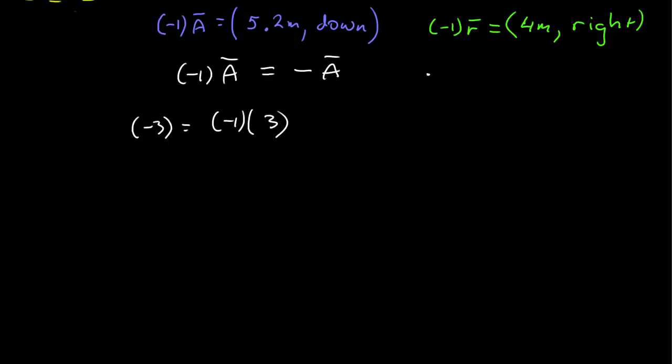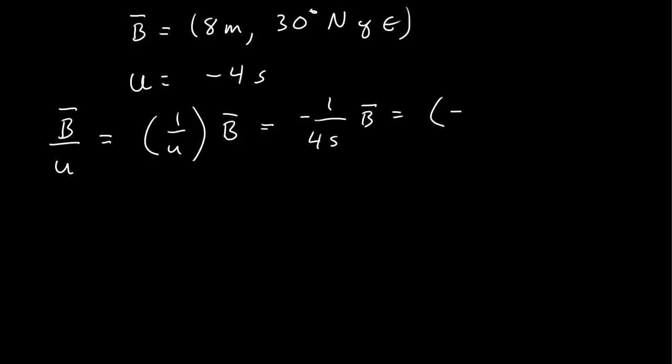So let's do one of those. I have the vector b, which is equal to 8 meters, 30 degrees north of east. My scalar u is negative 4 seconds. I'm going to look at the vector b divided by u. Well, that's just 1 over u times the vector b, and that's negative 1 over 4 seconds, which is a combination of negative 1 times 1 over 4 seconds, which is positive.